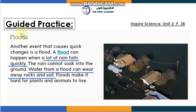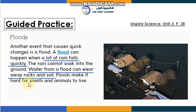Let's read what's written here: 'Floods — another event that causes quick changes is a flood. A flood can happen when a lot of rain falls quickly. The rain cannot soak into the ground. Water from a flood can wear away rocks and soil. Floods make it hard for plants and animals to live.'